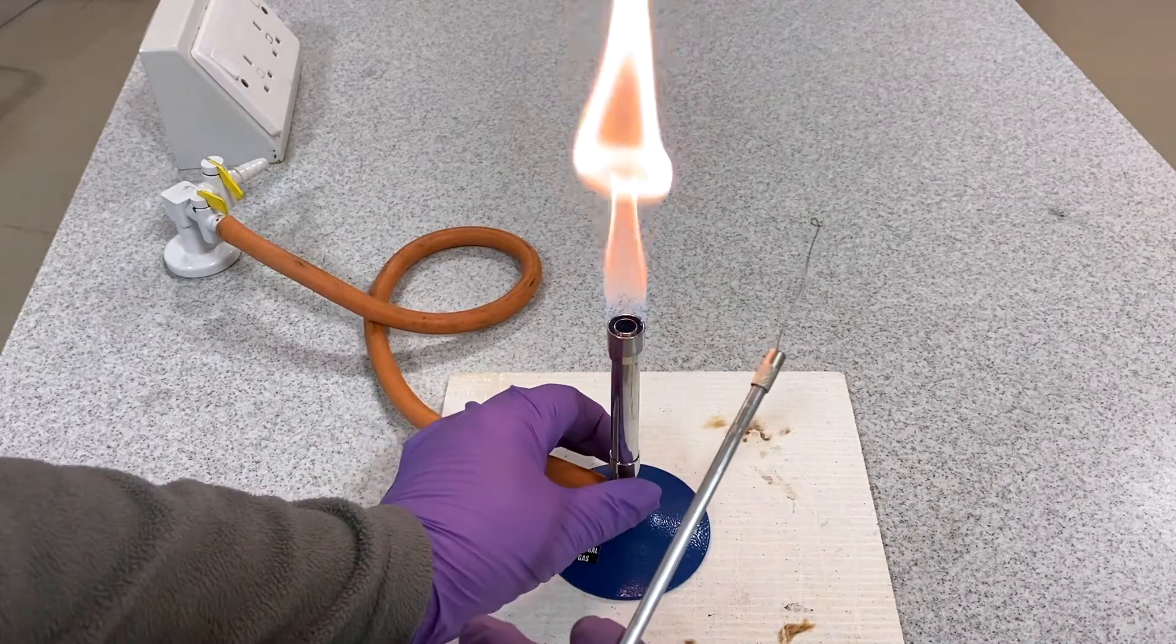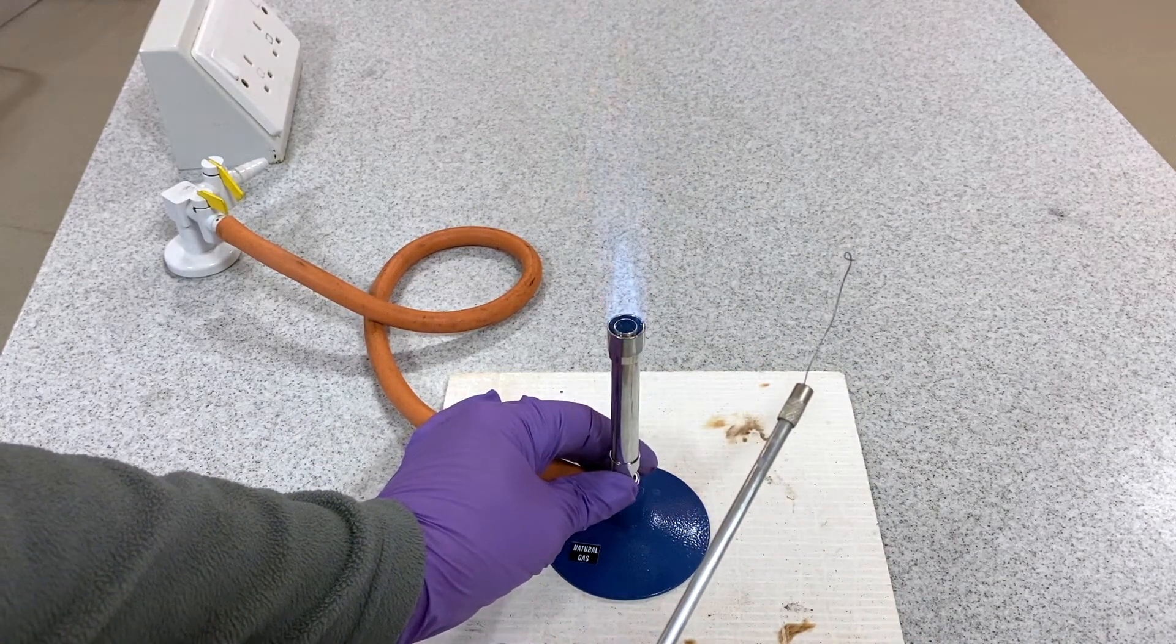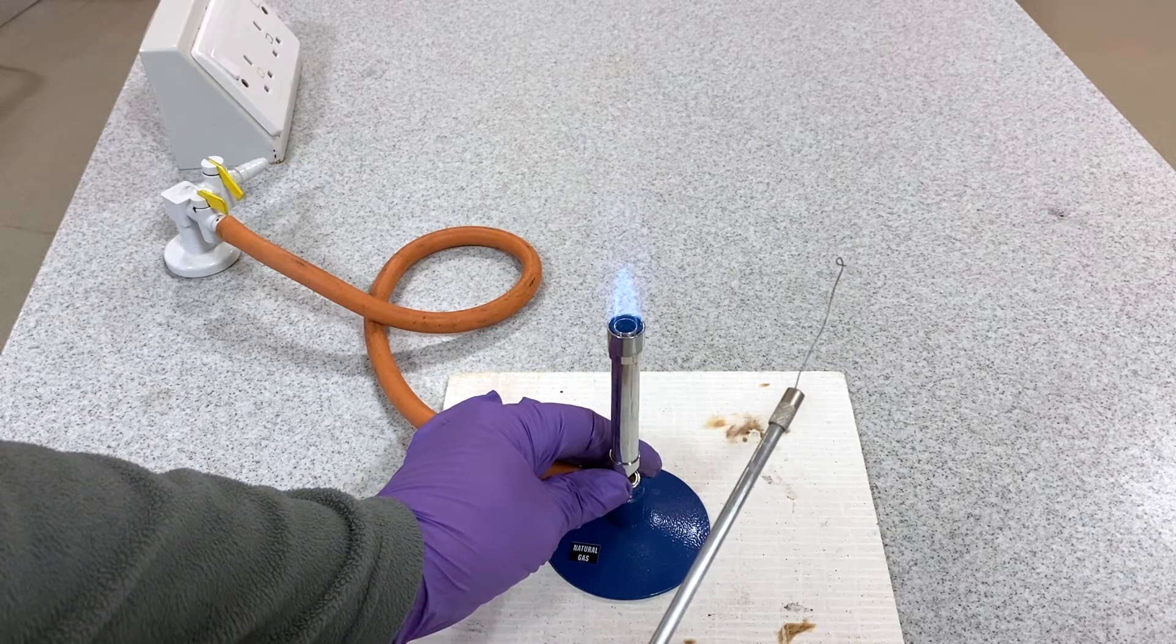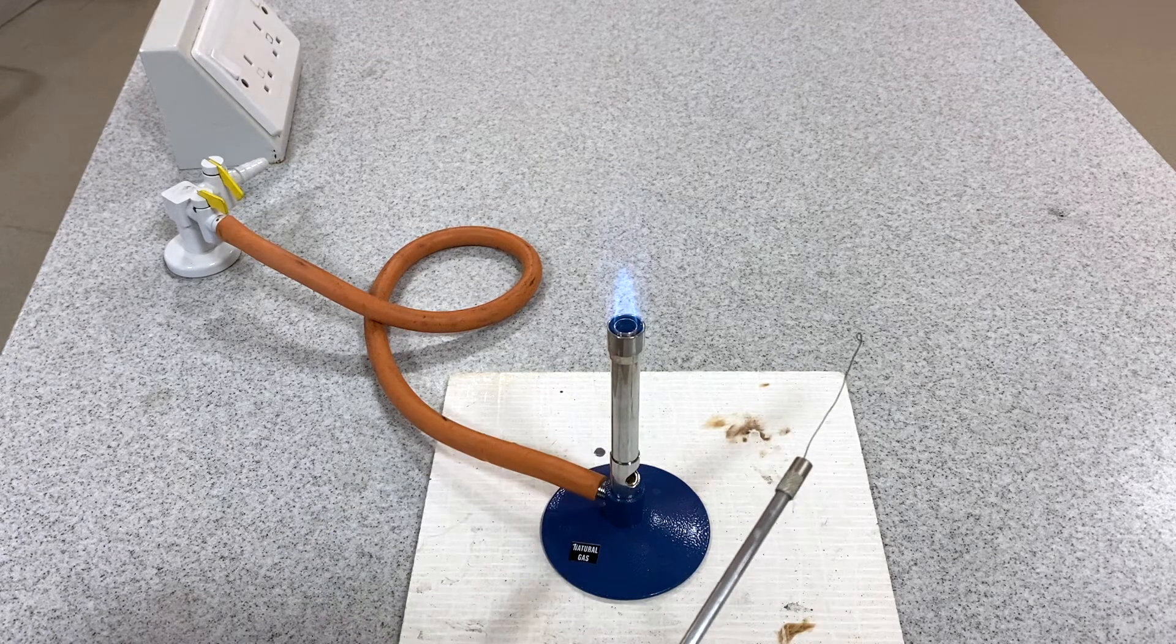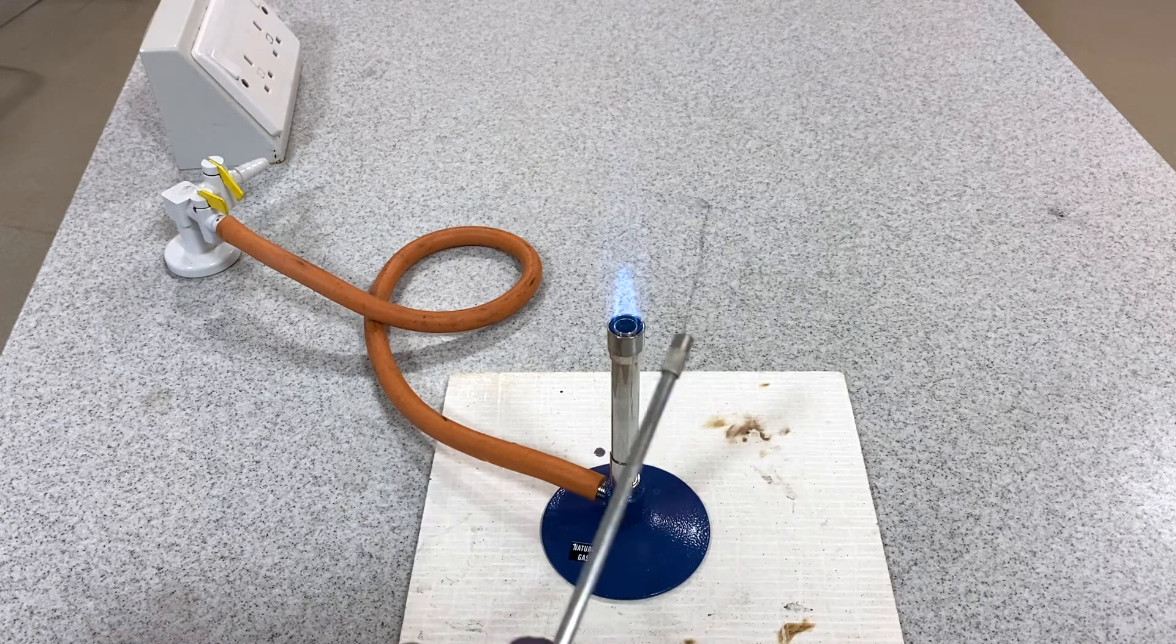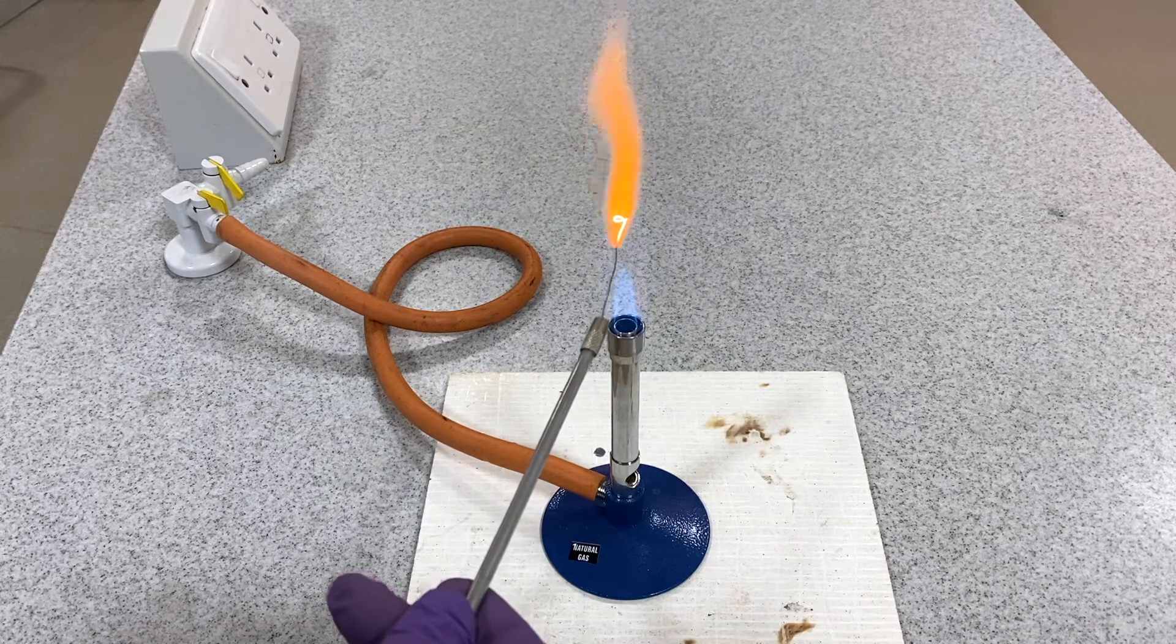The petri dish with the agar medium can be used to create a streak plate. A streak plate is created when a bacteria sample is placed onto a wire loop and streaked across the surface of the agar. To sterilize this wire loop, it is passed through a hot Bunsen flame.